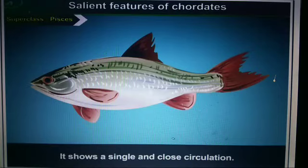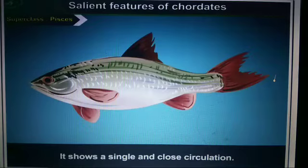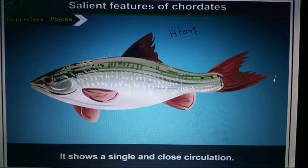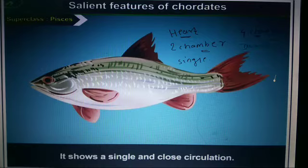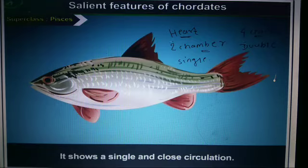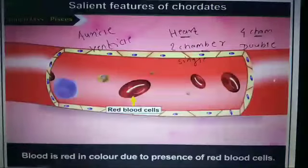Respiration is with the help of gills. The heart is two-chambered, with one auricle and one ventricle, resulting in single circulation and closed circulation. The blood is red in color due to the presence of red blood cells.